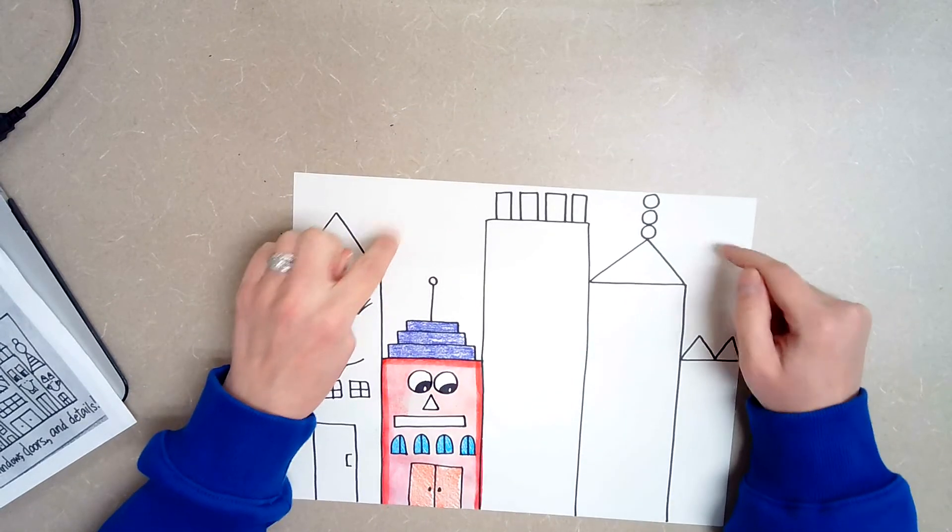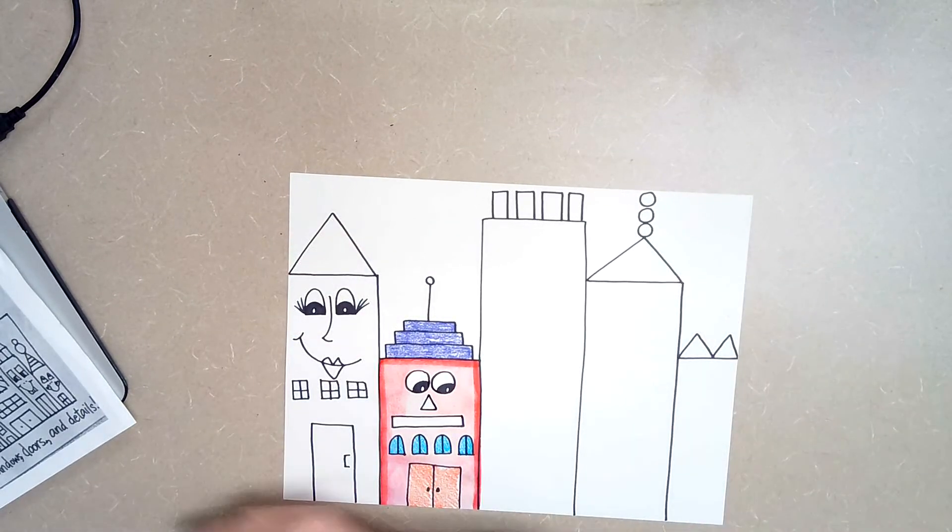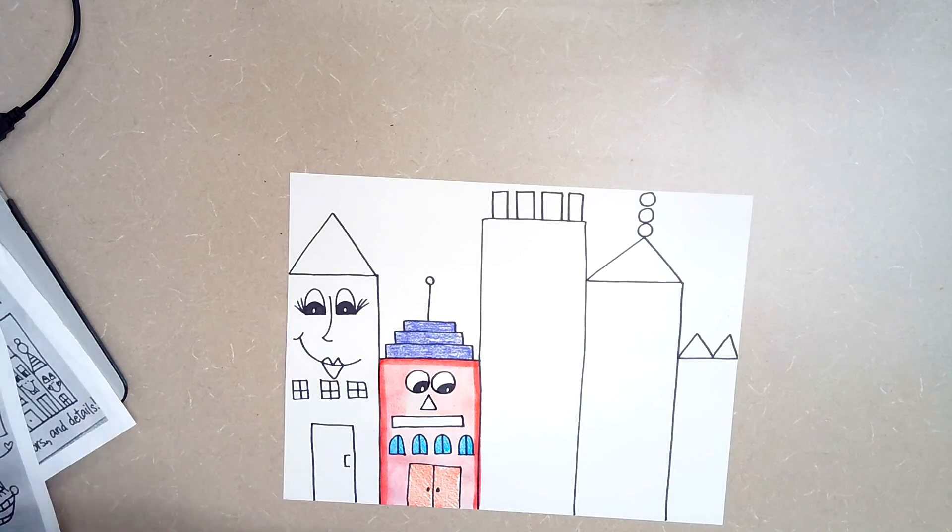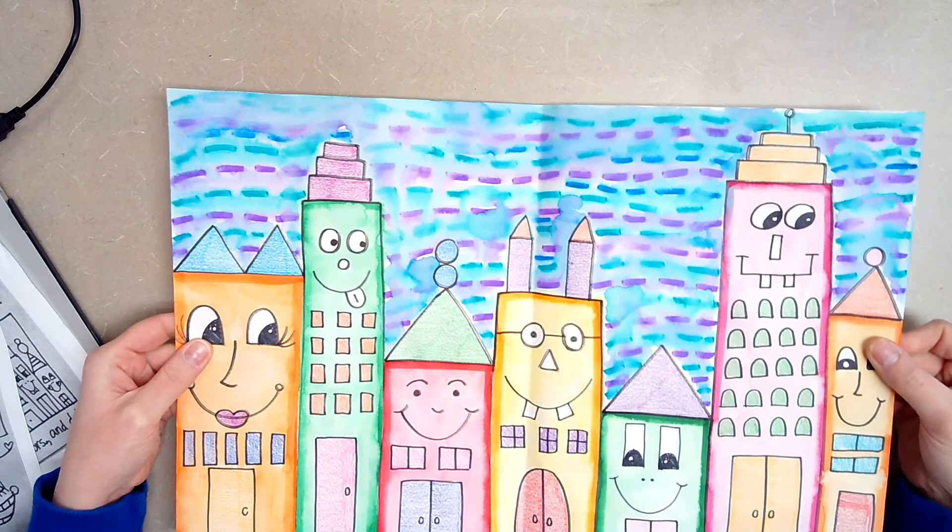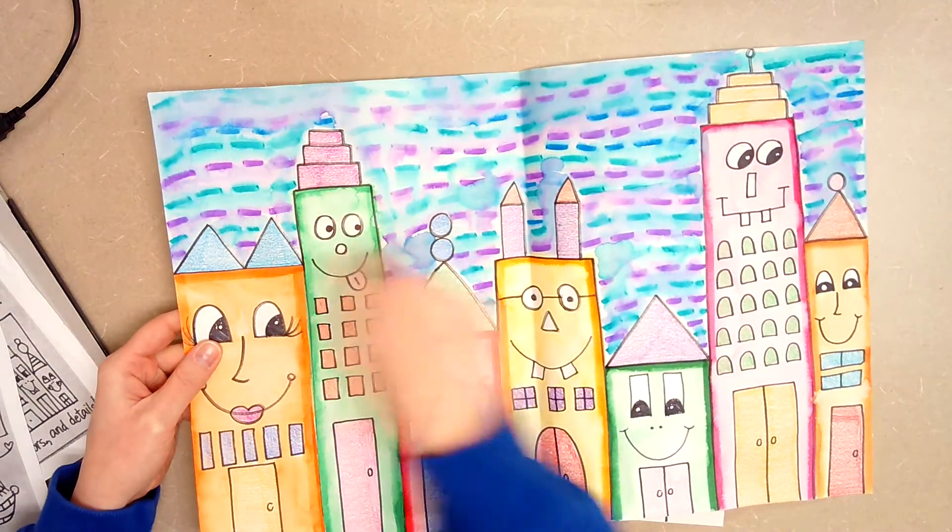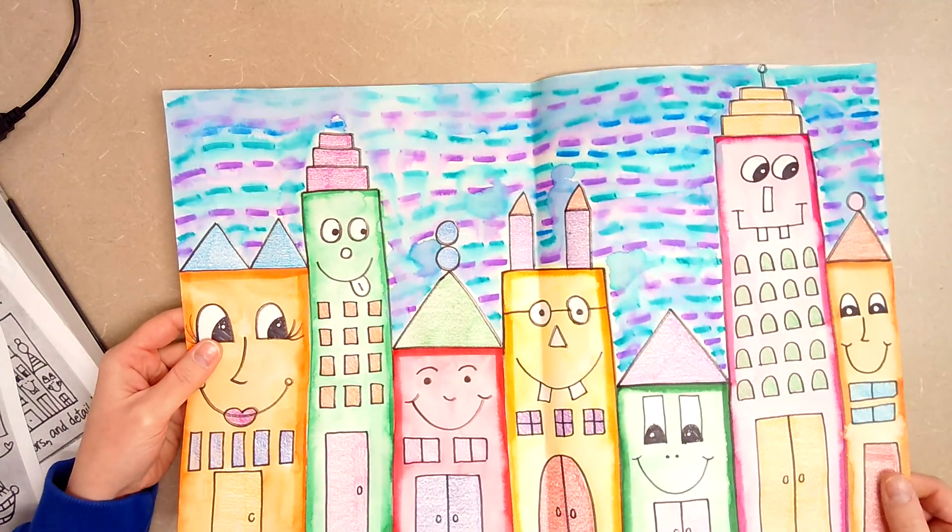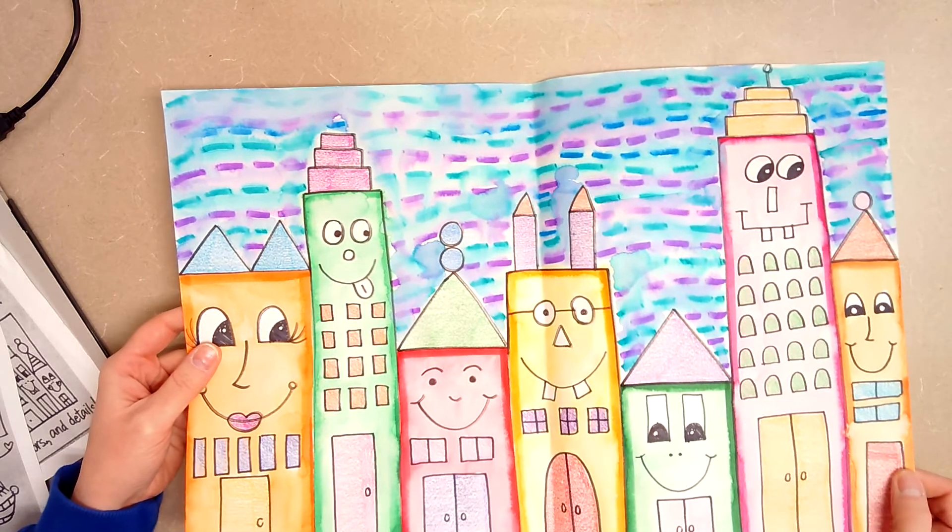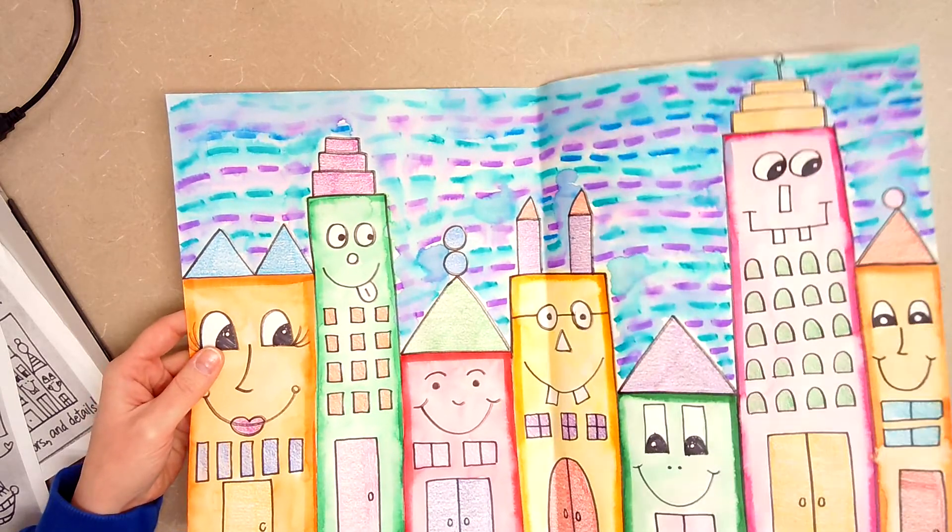The next step is we're going to work on the sky. In the one that I have finished, I did kind of like a dashed line using my marker and then I just did my marker trick to fill in the background. So you are more than welcome to do your background that way.